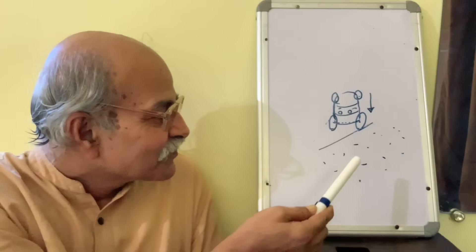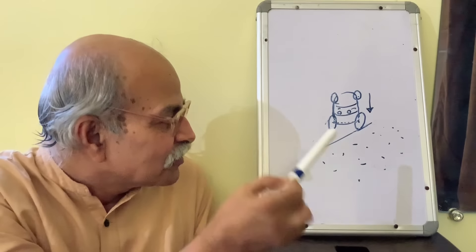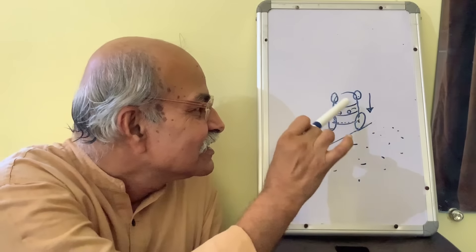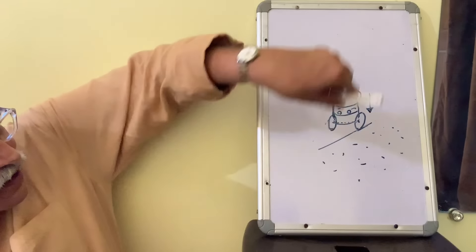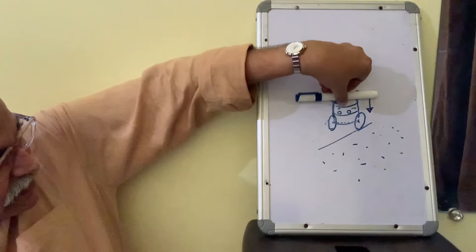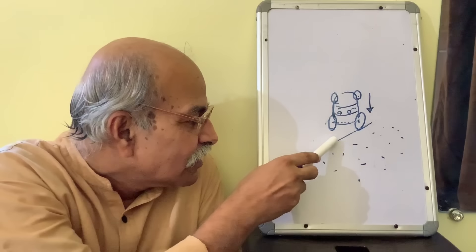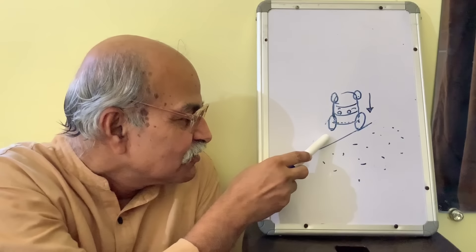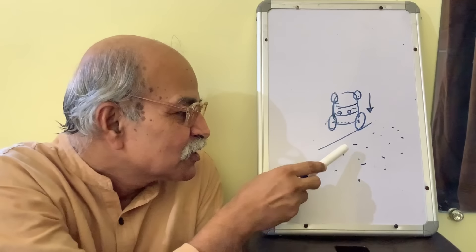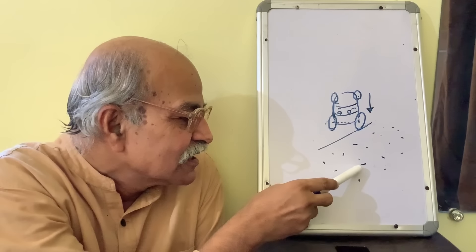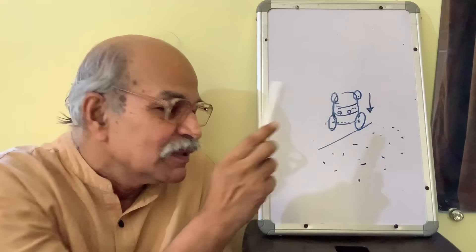So if you consider light as an extended object, then there is a very good analogy by which you can understand why it bends when the speed goes down. Look at this diagram — look at this car. It doesn't look like a car, but let's suppose it is, with front wheels and rear wheels and the body, coming in a particular direction. Here are two different media: one kind of road is bumpy, so the speed of the car is lower on that side and higher on this side.